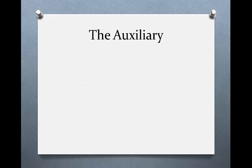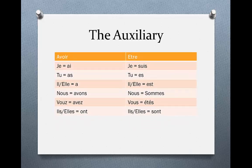Now we're going to have a look at what the auxiliary really is. The auxiliary verb is the verb that we put in the sentence, and it is always either avoir or être. Certain verbs are going to take avoir and certain verbs are going to take être — we'll look at which verbs take which later. What we have to do is conjugate the auxiliary in the present and put it before the past participle to form this tense.